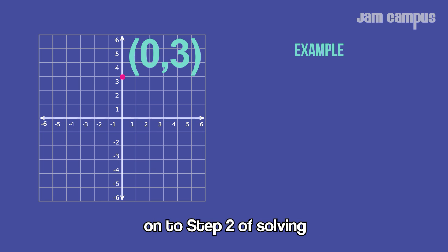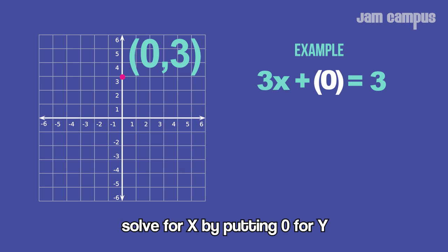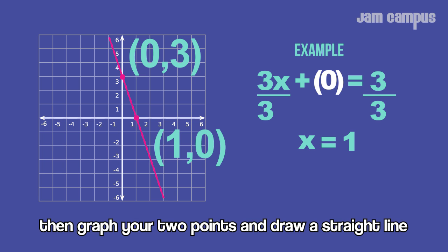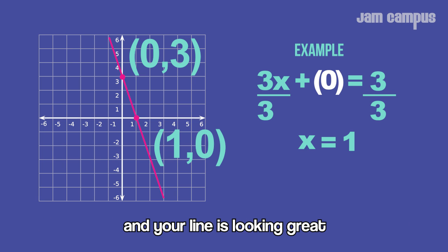On to step two of solving: solve for x by putting 0 for y. x equals 1, so (1, 0) is your next intercept point. You've got your two points—draw a straight line and your line's looking great.